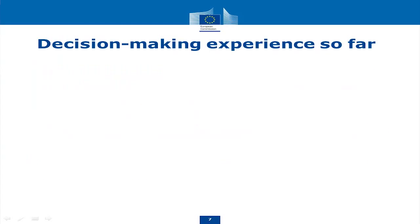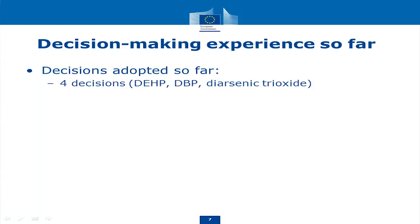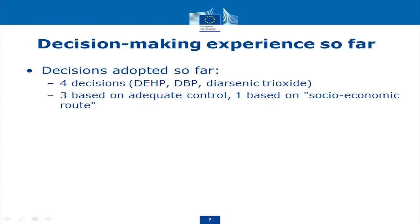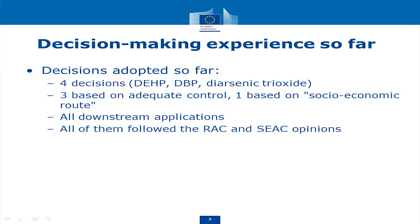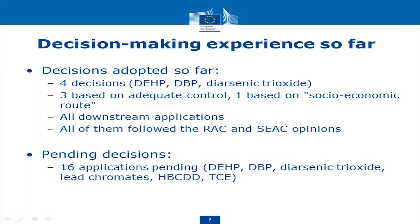What has been the decision-making experience so far? We have so far four decisions adopted — on DEHP, DBP, and arsenic trioxide. Three of them are based on adequate control and one on the socioeconomic route, and they are all downstream applications, quite straightforward ones. All decisions adopted by the Commission followed the RAC and SEAC opinions and recommendations, including regarding monitoring arrangements. We now have pending decisions — we have a backlog of 16 applications pending, which cover many opinions, since every opinion is per use. A few of them are upstream applications, which is a new and quite challenging experience, which is why it's taking a little bit more time. Most of them are also under the socioeconomic route.